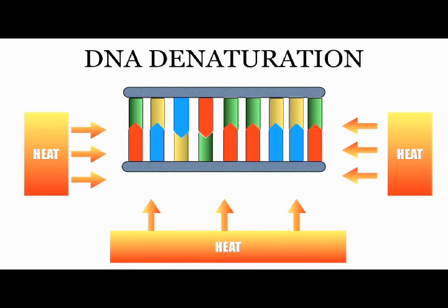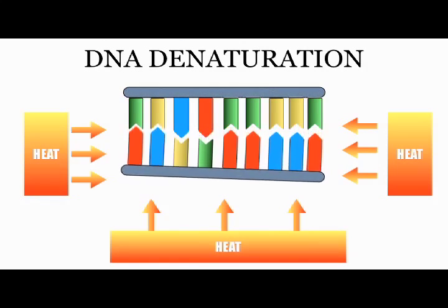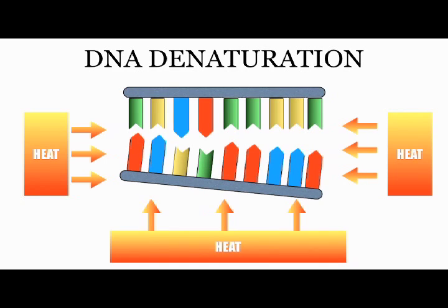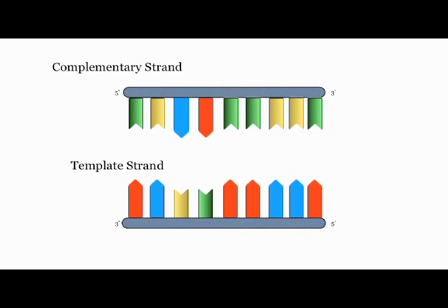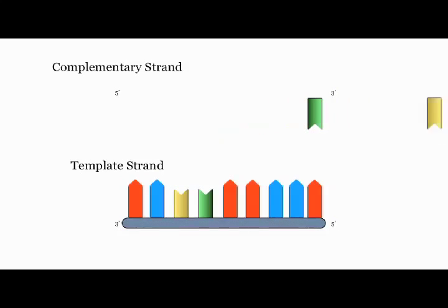The DNA to be sequenced must be denatured and converted from double-stranded DNA into single-stranded DNA. This is done through the application of heat. The DNA splits into a template strand and its complementary strand.